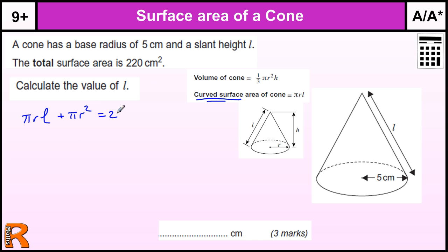And that total is 220. Now if you wrote that equation down, you'd get one method mark straight away. Put the numbers in. We get π times r, which is 5, so I just put the 5 in front of the π, and L plus π times r squared. R squared is 25, so we've got 25π.